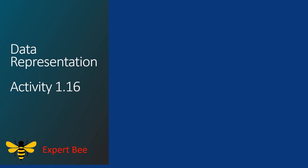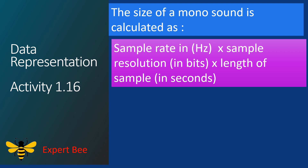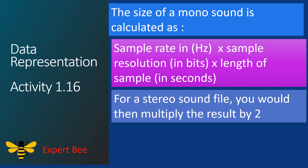The second formula used in this activity is the size of a mono sound, which is calculated by: sample rate in Hertz multiplied with sample resolution in bits, multiplied with length of sample in seconds. Remember, for a stereo sound file you would then multiply the result by 2.